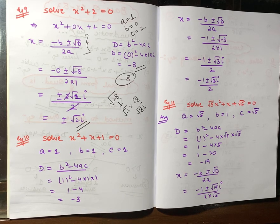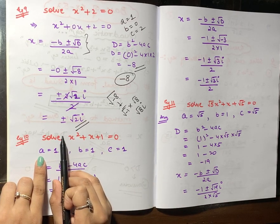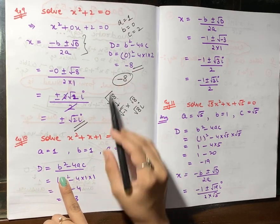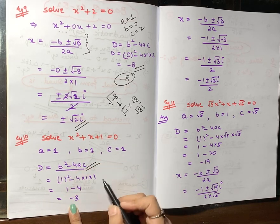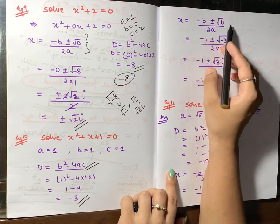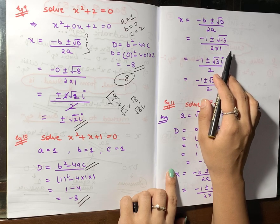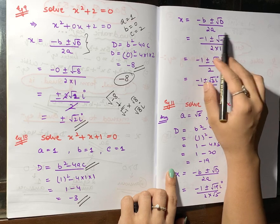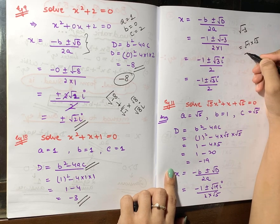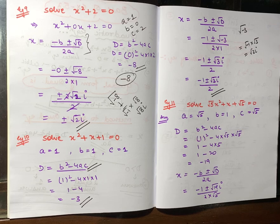Moving on to Example 10: solve x² + x + 1 = 0. Here a = 1, b = 1, c = 1. D = b² − 4ac = 1² − 4(1)(1) = 1 − 4 = −3. So x = (−1 ± √(−3)) / 2. Writing √(−3) = √3 · i, the final answer is x = (−1 ± i√3) / 2.